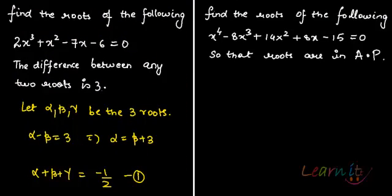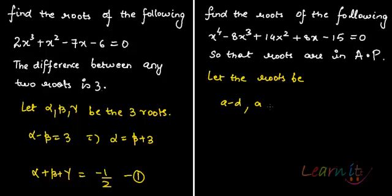Now let's do the other question — how to solve when you have roots in AP and the equation is biquadratic, meaning a degree 4 polynomial. Let the roots be A minus D, A, A plus D, and A plus 2D, since they have a common difference. So we have 4 roots for the biquadratic equation.